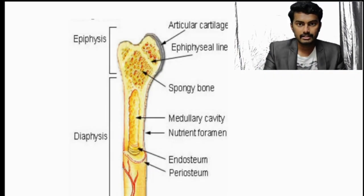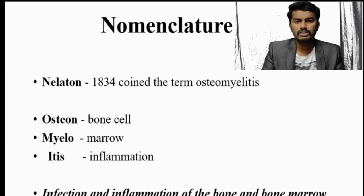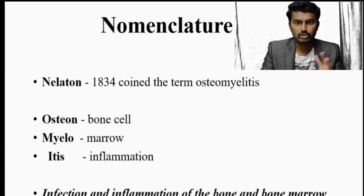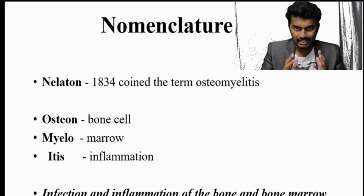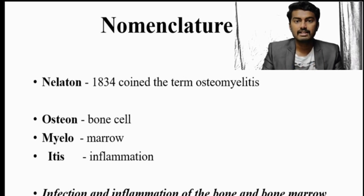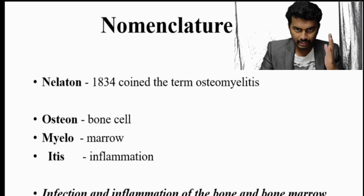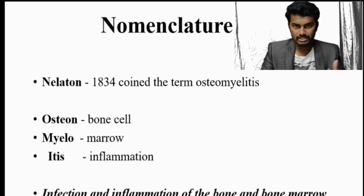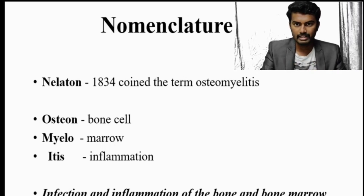Regarding nomenclature, Melaton coined the term osteomyelitis in 1834. The word 'osteon' means bone, 'myelo' means marrow, and 'itis' means inflammation. The definition should be stated as: the infection and inflammation of the bone and the bone marrow cavity by microorganisms. Many students fail to include 'bone marrow cavity,' so that must be included.